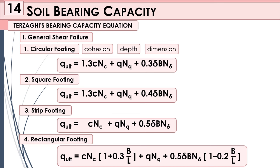0.2B/L). So the term cNc(1 + 0.3B/L) represents the strength due to cohesion. The term qNq represents the strength due to surcharge, which results from overburden pressure. And 0.5γBNγ(1 − 0.2B/L) represents the strength due to footing dimensions. So the bearing capacity equation has three components: cohesion, surcharge, and dimension.